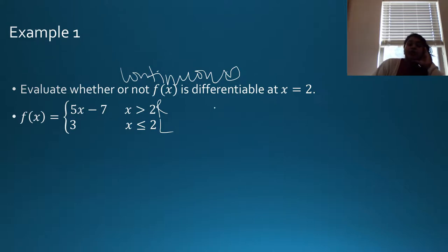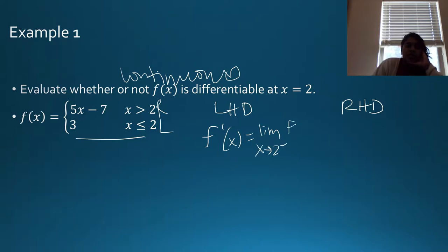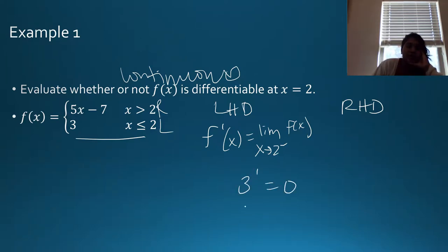For differentiability, we look at the left-hand derivative and the right-hand derivative. From the left, f′ is the limit as x approaches 2 from the left — that's really the derivative of 3, which equals 0. So my left-hand derivative is 0.